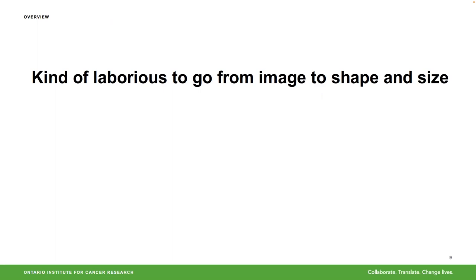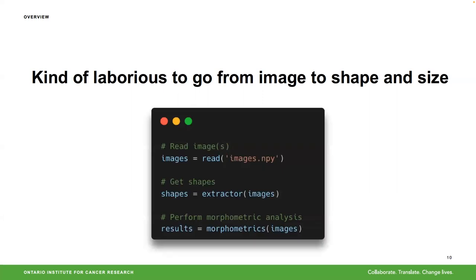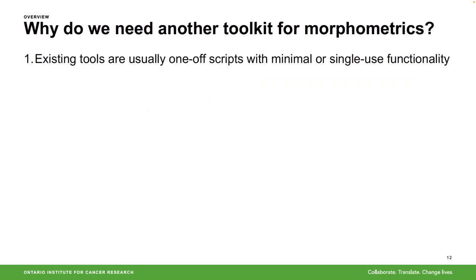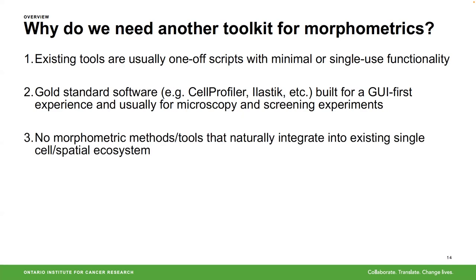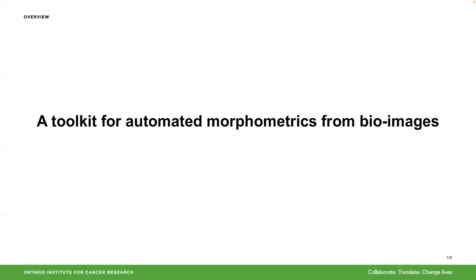Why I wanted to do morphometrics is I just wanted to look at spatial data and get a simple readout of shape and size, but I found it was really laborious to go from image to shape and size in practice. Ideally I'd have three lines of code to go from images to shapes and do morphometrics. In a world of existing tools for quantitative bioimaging, why do we need another toolkit? Many existing tools are one-off scripts with minimal or single-use functionality, broken codebases, bad documentation, and are not reproducible. Gold-standard software tends to be GUI-first and built for microscopy or screening where you have large N but not big spatial images. Crucially, there are no morphometric tools that naturally integrate into the existing single-cell spatial ecosystem.